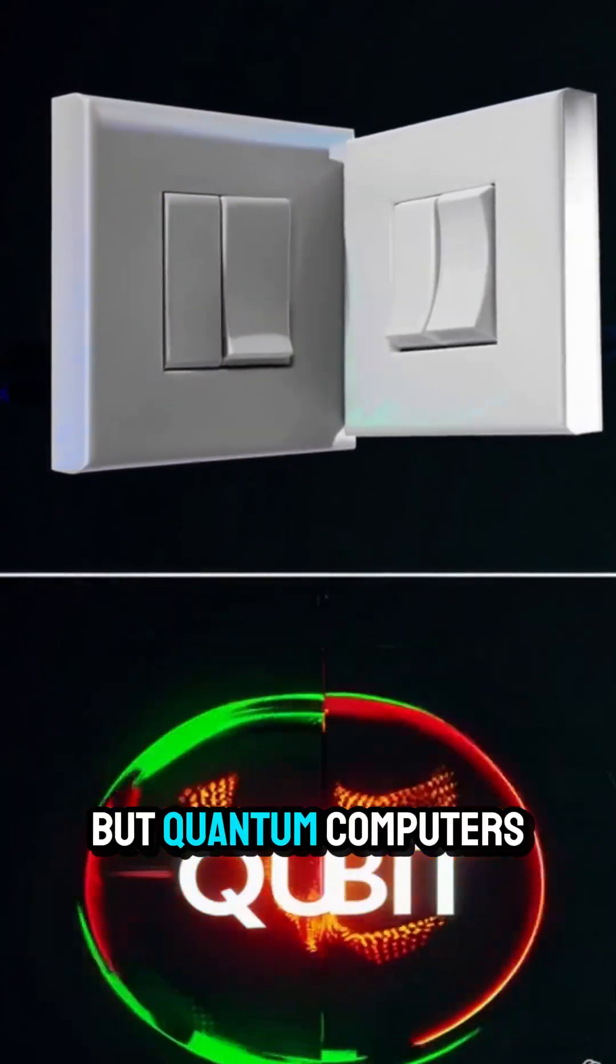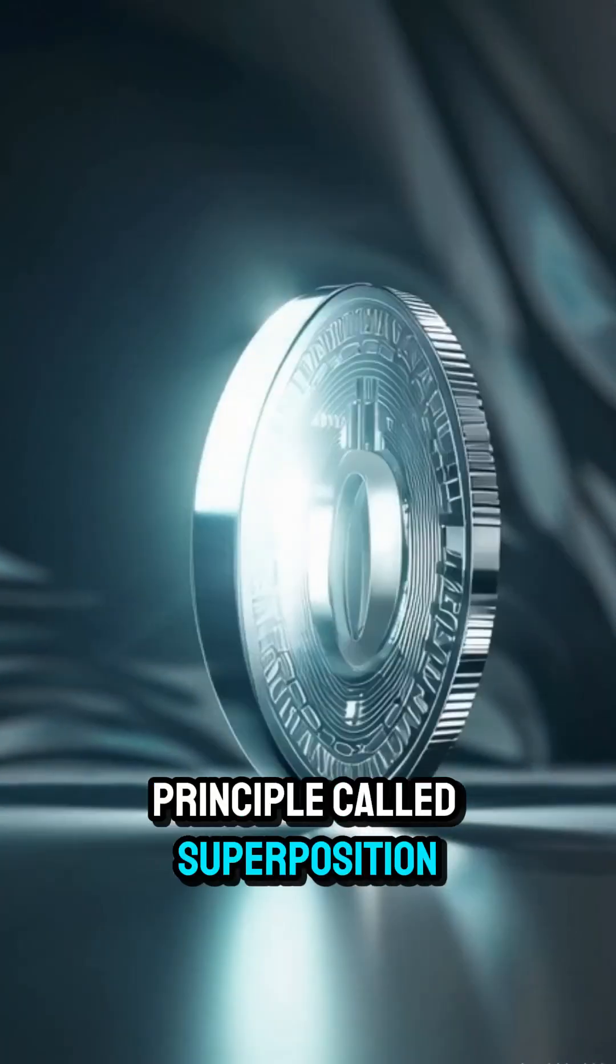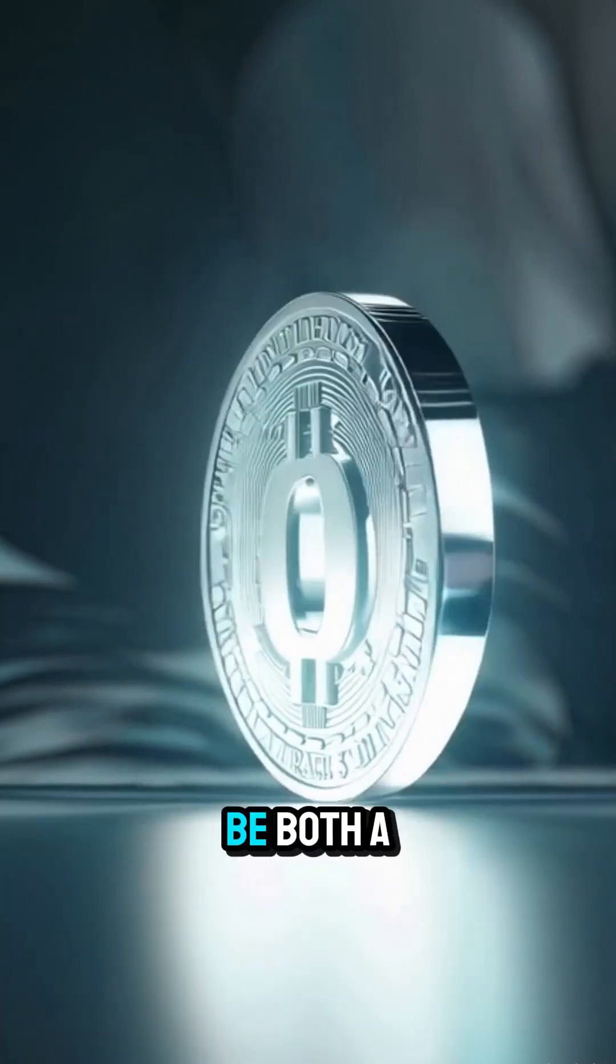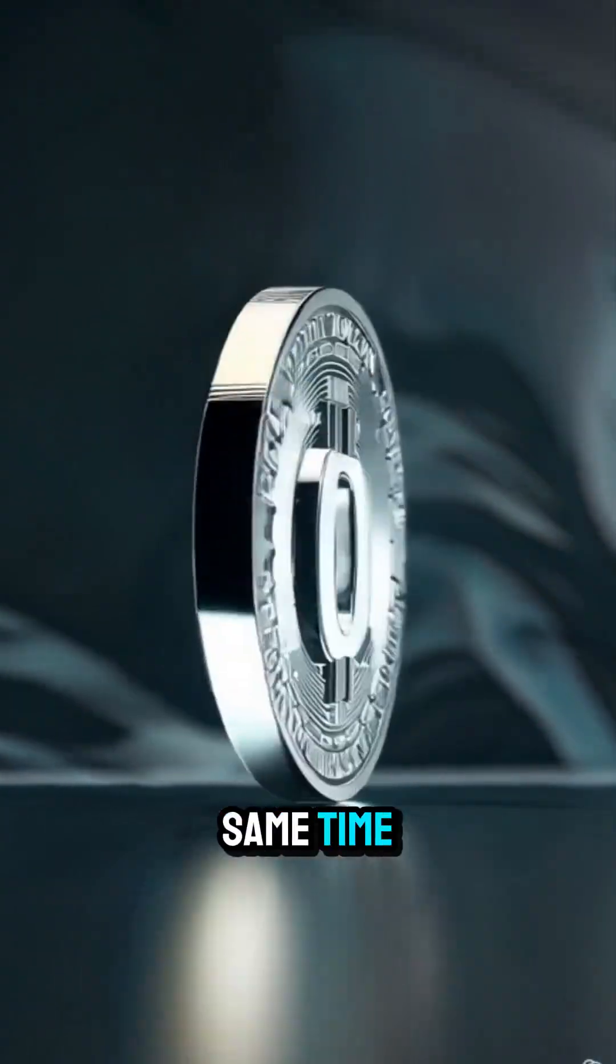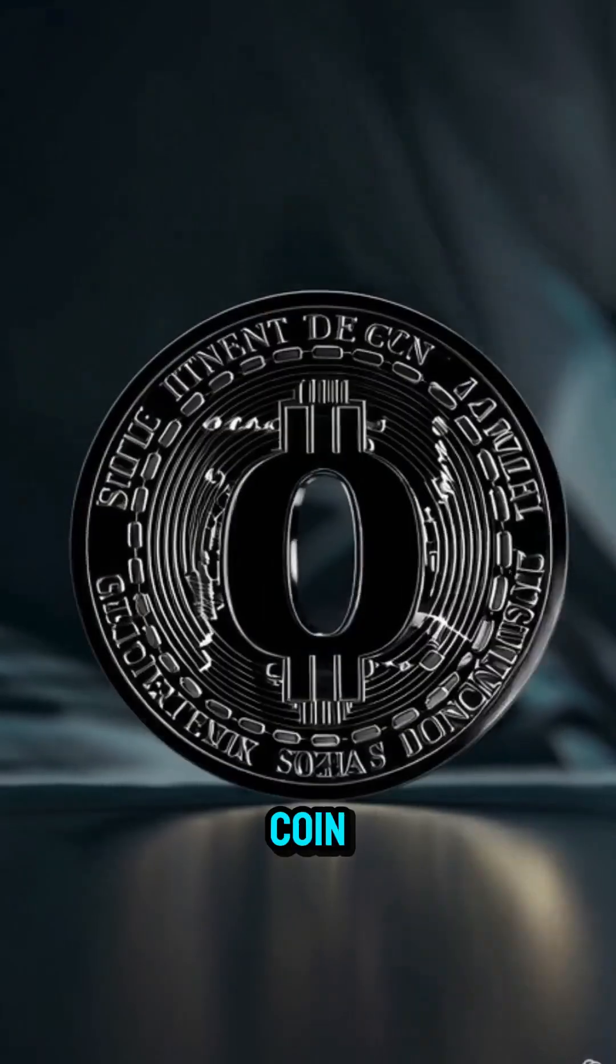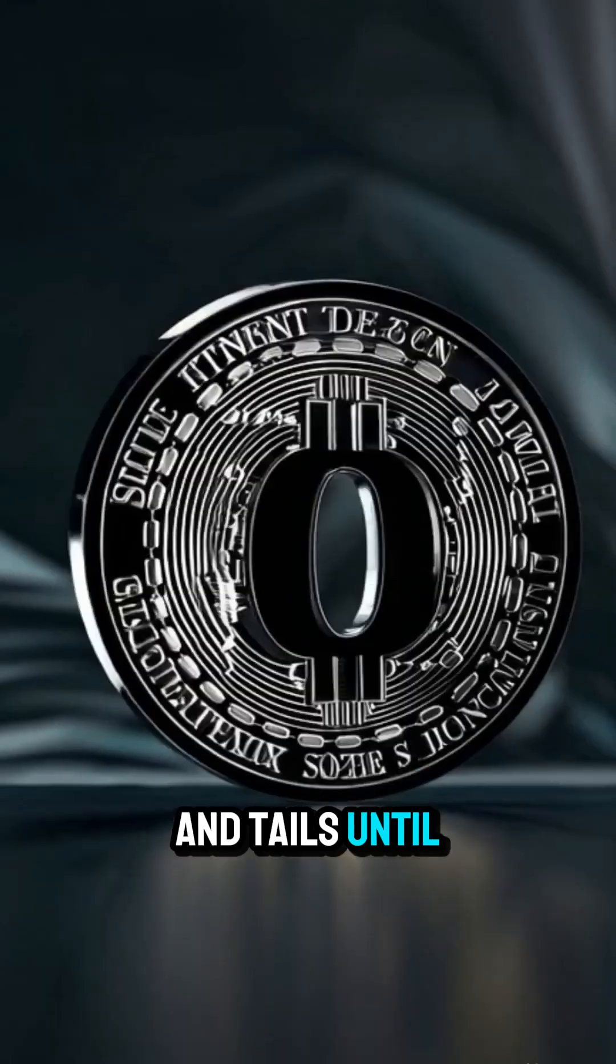But quantum computers use qubits. Thanks to a principle called superposition, a qubit can be both a zero and a one at the same time. Think of it like a spinning coin. It's both heads and tails until it lands.